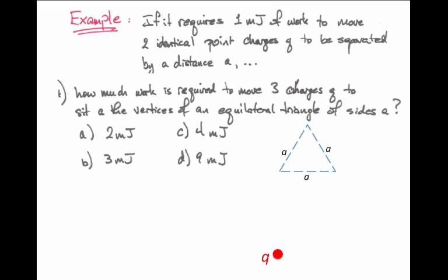If we bring in our first charge from infinitely far away and locate it at one vertex, then no work is required because there's no force being exerted on that charge from anything already in the picture. However, when we bring in the second charge and locate it on the other vertex of this triangle, this requires some work because there's already the first charge in place. It has an electric field around it, and we know from the setup of the problem that this would take one millijoule.